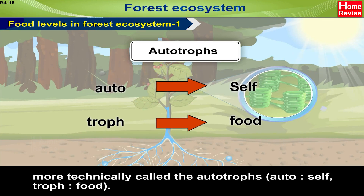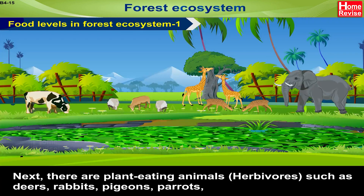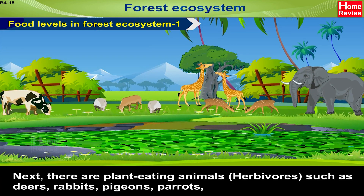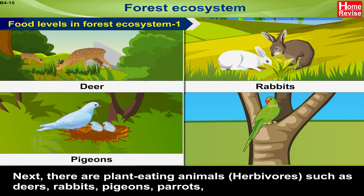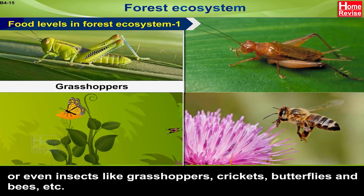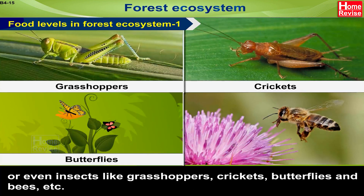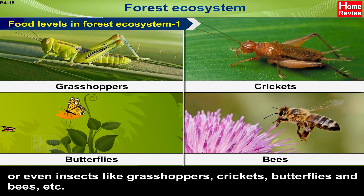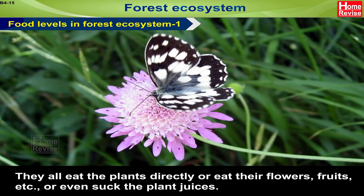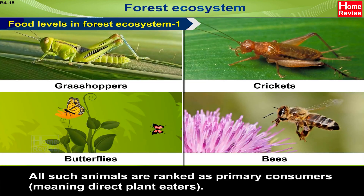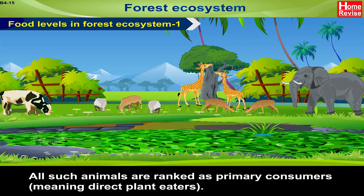Auto means self, troph means food. Next, there are plant-eating animals, i.e. herbivores, such as deer, rabbits, pigeons, parrots, or even insects like grasshoppers, crickets, butterflies, and bees. They all eat plants directly, or eat their flowers, fruits, etc., or even suck the plant juices. All such animals are ranked as primary consumers, meaning direct plant-eaters.